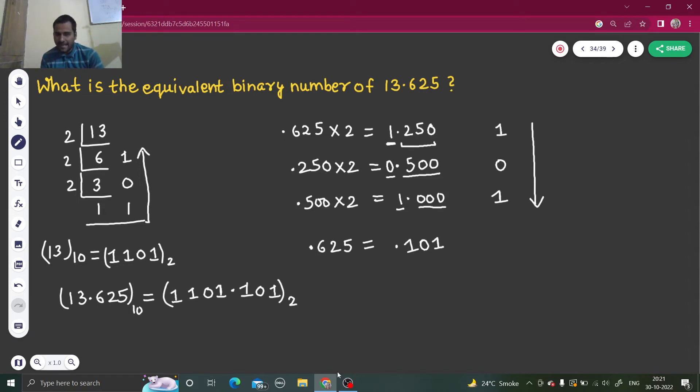Now sometimes in the second step, in this step I am talking about, you will get a case when you will keep on multiplying by 2 but in the right of decimal you will not get zero.